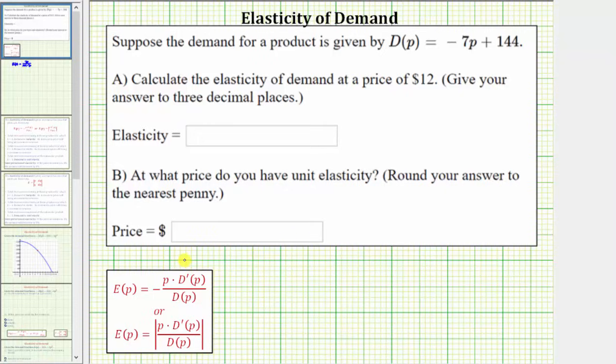Another way to express e of p is e of p equals the absolute value of p times d prime of p divided by d of p, where the absolute value makes e of p non-negative. Notice to find e of p, we must first find d prime of p. d prime of p is equal to the derivative of negative seven p plus 144, which is equal to negative seven.